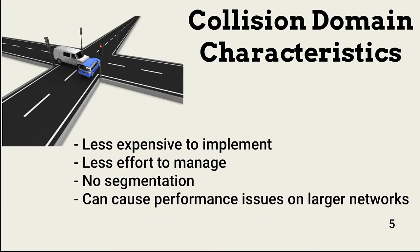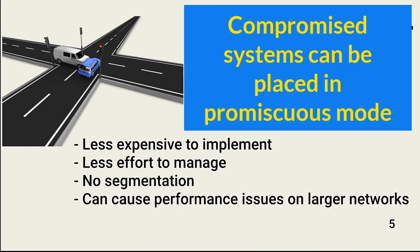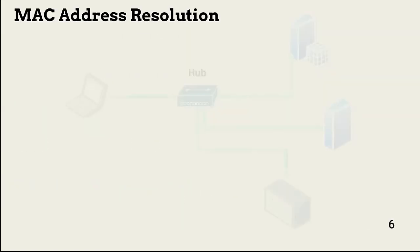Collision domains are less expensive to implement because they don't use switches to control traffic. This also makes them easier to manage because hubs usually require no configuration. However, every device can see all the traffic on the network, meaning a compromised system can see and collect all packet data. Finally, packet collisions can cause performance issues as the size of the network increases.